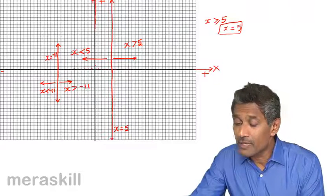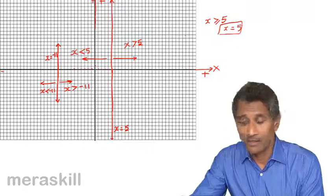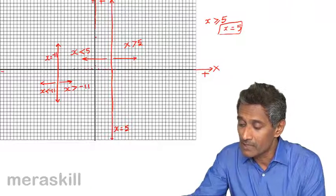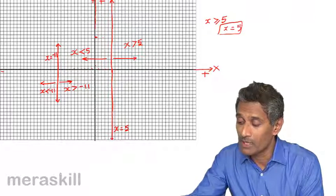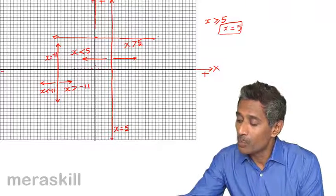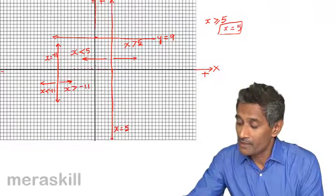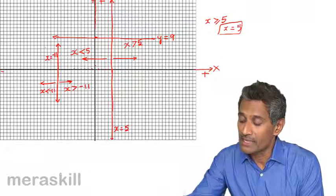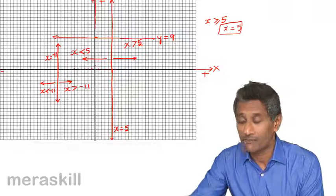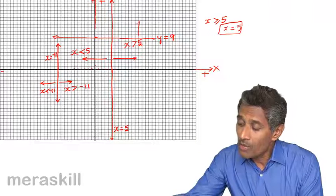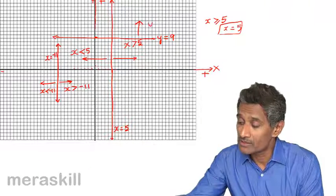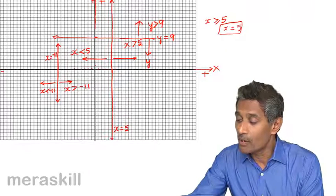Similarly, we can consider lines parallel to the x-axis. On the y-axis, let's take the value 9. Points on this line are 0 comma 9, 1 comma 9, 2 comma 9, minus 1 comma 9. Drawing a horizontal line through these gives y equals 9. The region above y equals 9 contains all points whose y-coordinates are more than 9 — that is the region y greater than 9 — and below it is y less than 9.